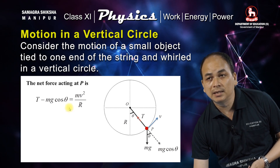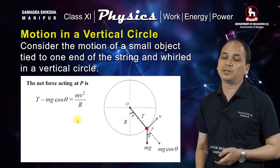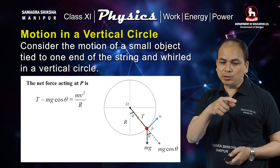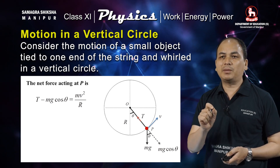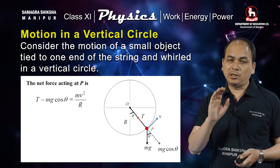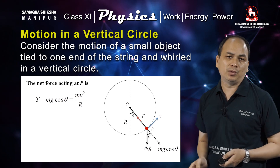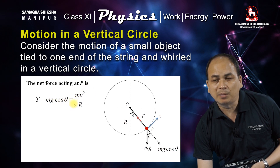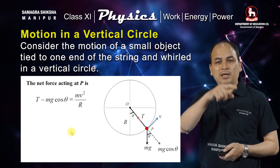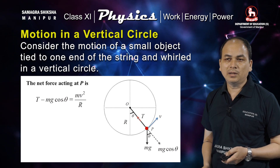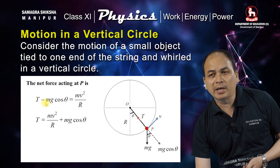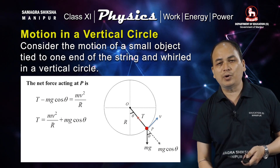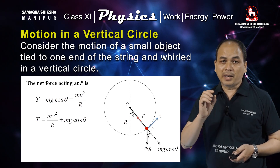Now the question arises: what is this mv²/r? It is nothing but the centripetal force. If you have a circular motion, there exists a centripetal force. Because of this, the string can complete a vertical circle. Let us consider that the tension at this point is mv²/r + mg.